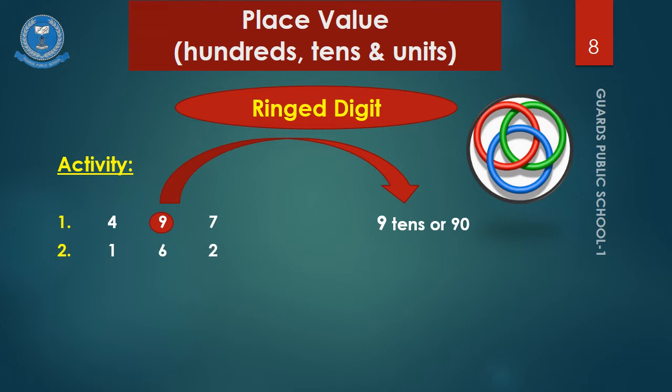Now, number two is one hundred and sixty-two. And, I am putting a ring in number two. Can you tell me, what is the place value of two? Yes, it's two units, or you can write as two.